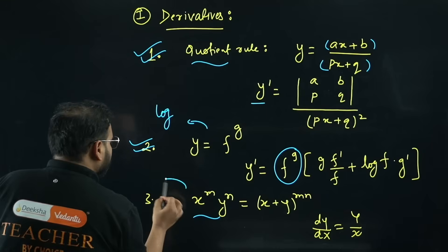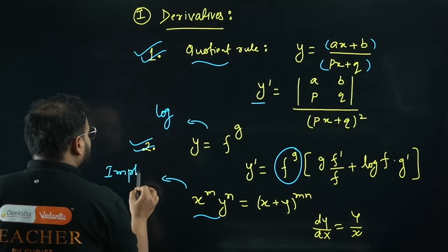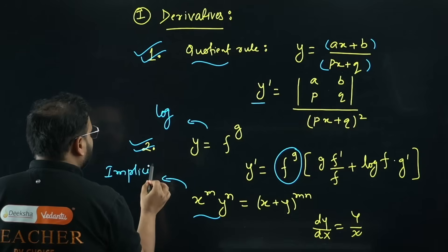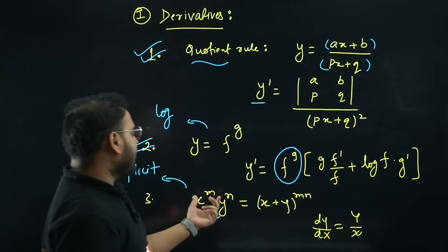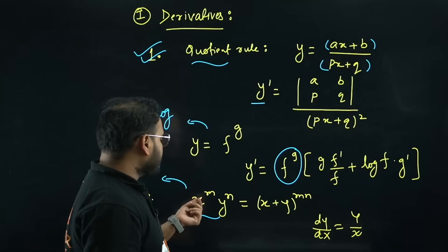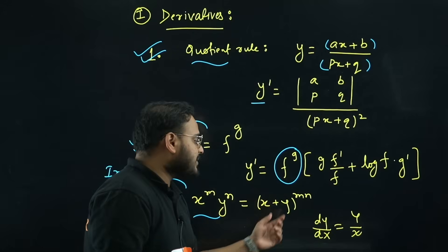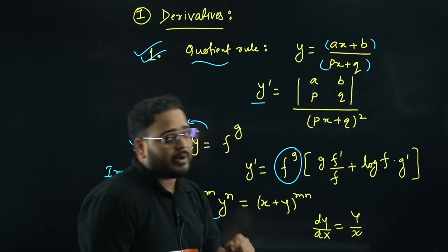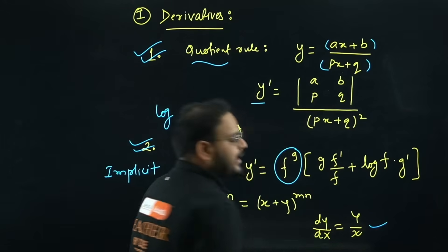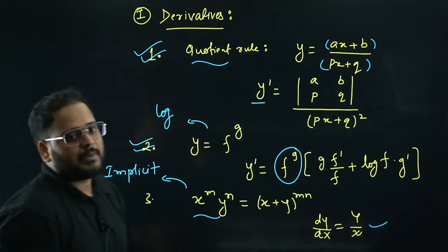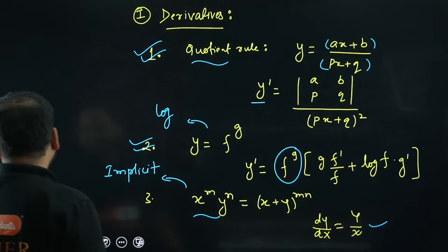Trick 3 is for implicit functions. Whenever you have x^m · y^n and (x + y)^(m+n), you can directly write the derivative as dy/dx = y/x. That completes the three tricks for derivatives.